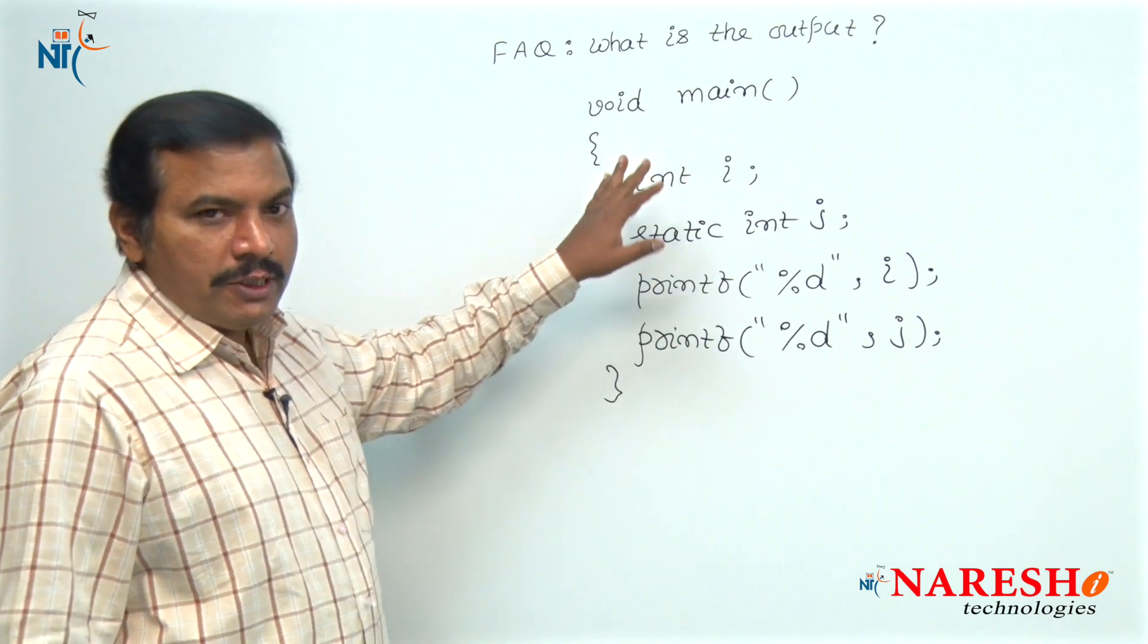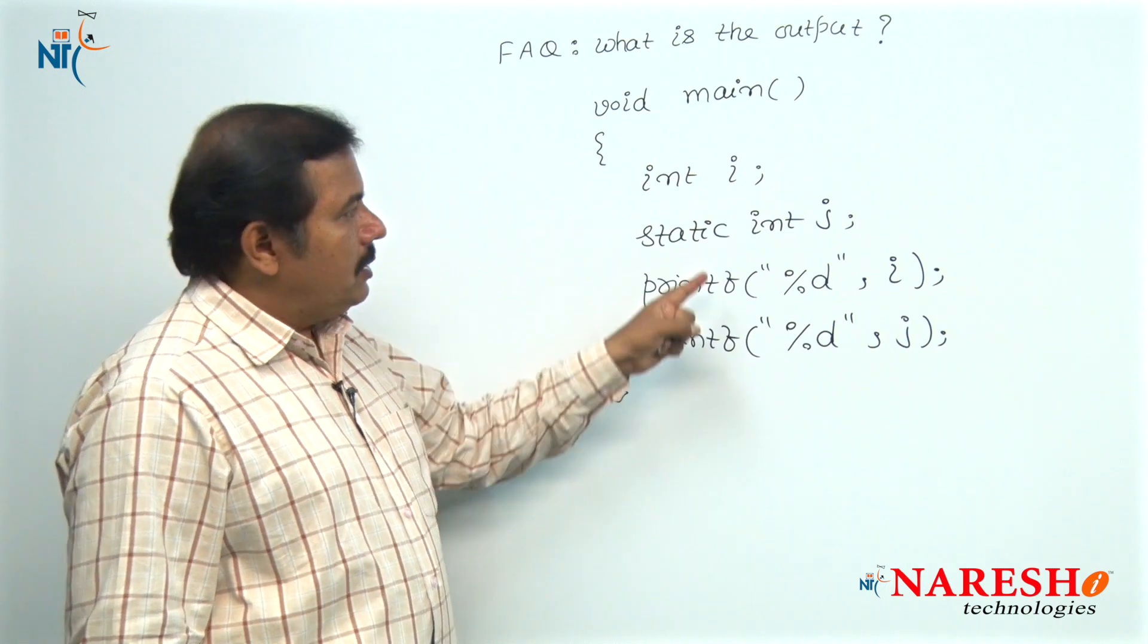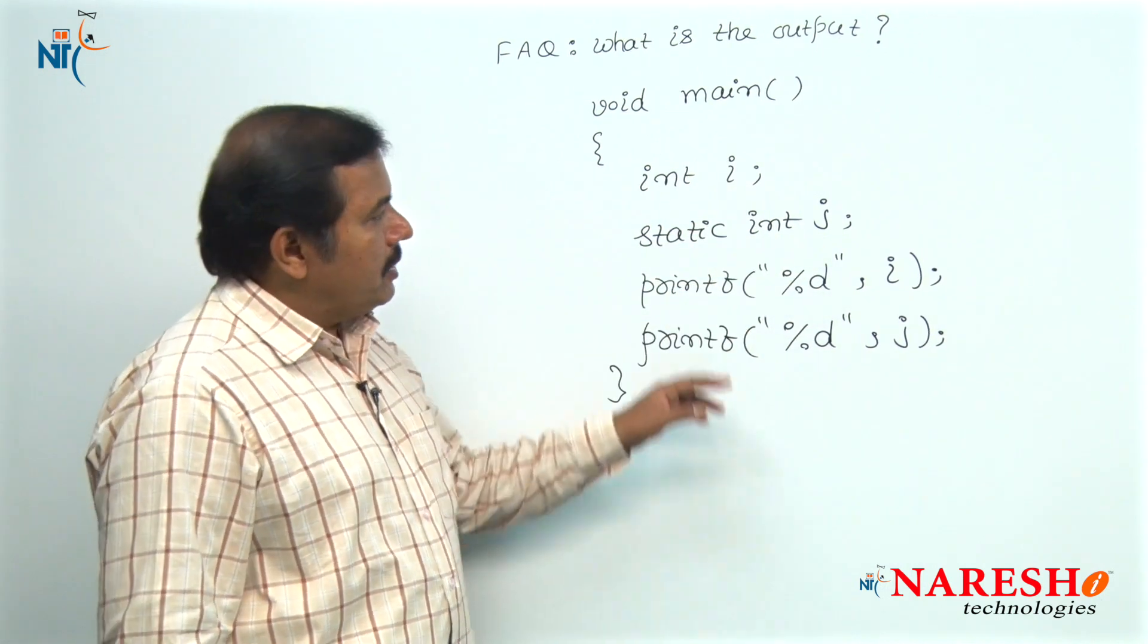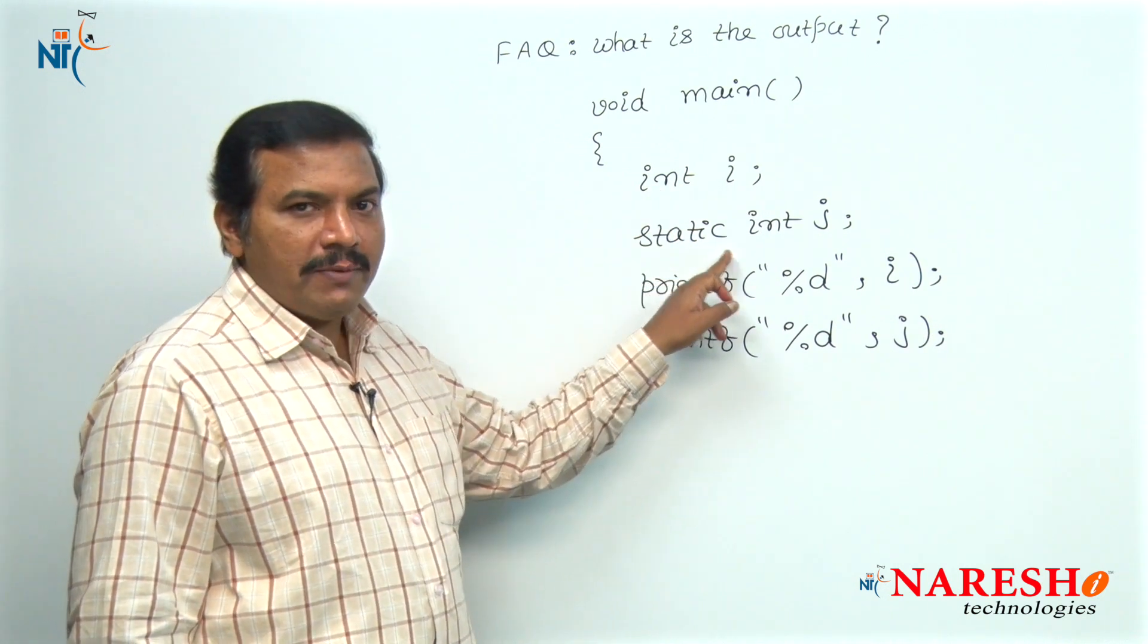Let us watch this question: what is the output of the following code? Inside this code, two variables are declared called i and j of type integer, and another variable is of type static int.